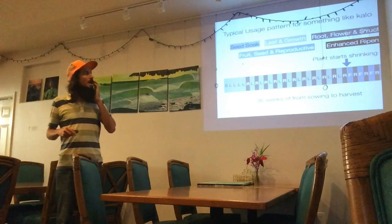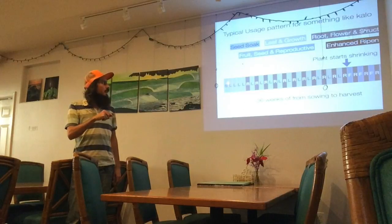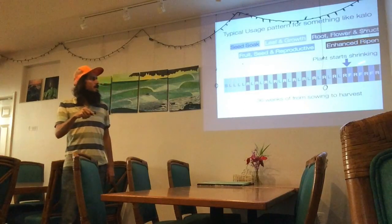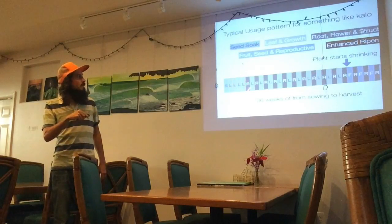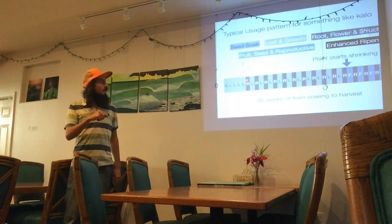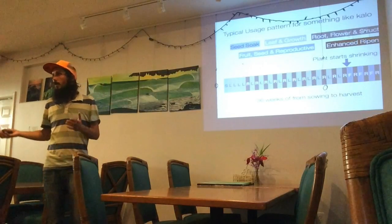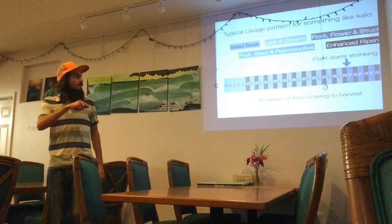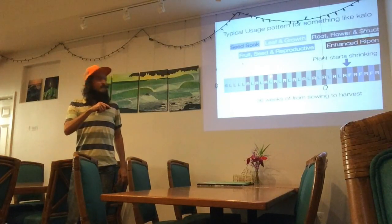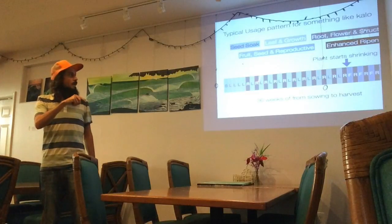Here's a basic schedule for kalo. You start at the beginning with a seed soak, and each division here represents weeks. When you first put your huli out, start applying leaf growth. The first four weeks you do leaf growth. Then you start alternating root and structure growth with leaf — every other week. One week CalPhos, next week fish amino acid, balancing those. This causes the plant to not only grow big leaves but also build structure and roots. You alternate these all the way through.